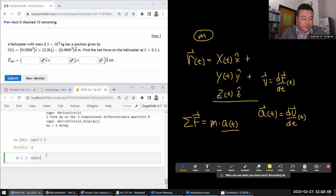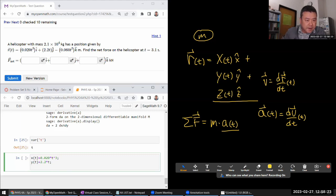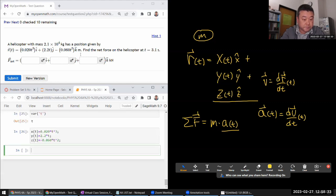So, x as a function of time is 0.02, the coefficient, times t to the third power. y as a function of time is 2.2 times t. And g as a function of time, I have to remember to include that minus sign - g as a function of time is minus 0.060 times t squared. All right, I think we are good.